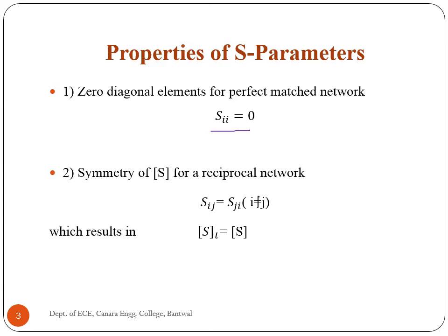Symmetry of S for a reciprocal network is the second property. A reciprocal device has the same transmission characteristics in either direction of a pair of ports, and is characterized by a symmetric scattering matrix, which means the transpose of S equals S. We will prove this in the next slide.